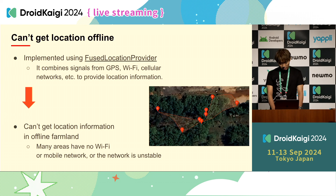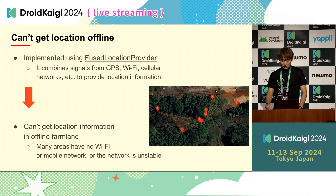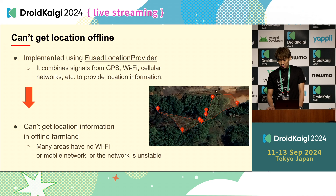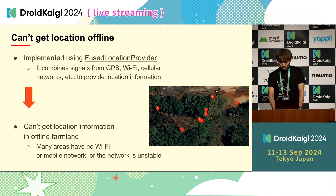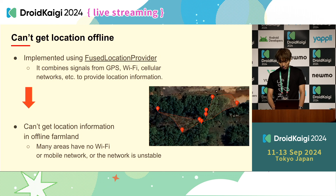We could get location information, but it was unstable — some points were different from the actual position or sometimes jumped to a different location. Many of the farmlands where we do farm mapping are in areas where the network is very unstable or there's no Wi-Fi, no mobile network. Since Fused Location Provider also uses network information, we assume it might be difficult to determine location well in areas where the network is very unstable or absent.